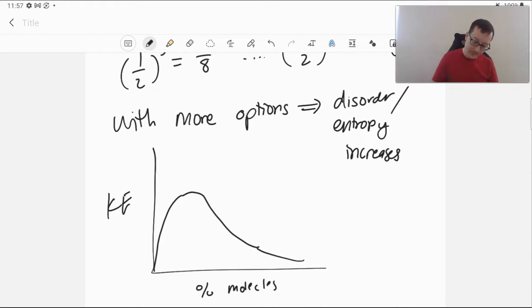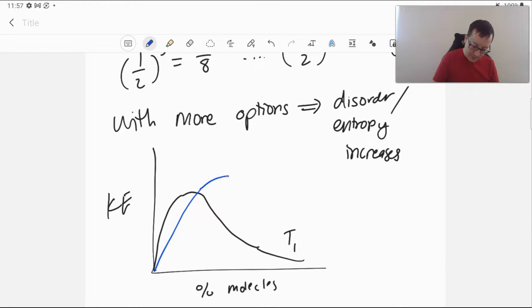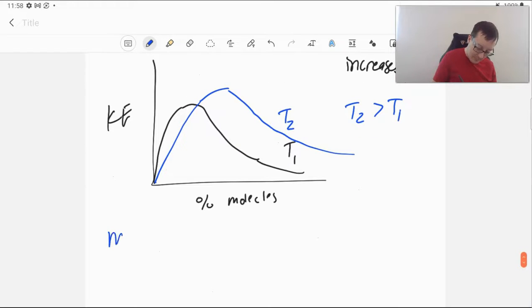At a given temperature, at T1. If we increase the temperature, we end up shifting that graph to the right. T2 is greater than T1. So we also see that if we increase the thermal energy, we have more possibilities of different kinetic energies for our molecules. So that's more options as well. And so we see that with heat, with more molecules, delta S increases. With more temperature, delta S increases.